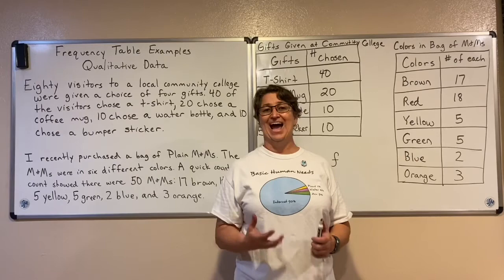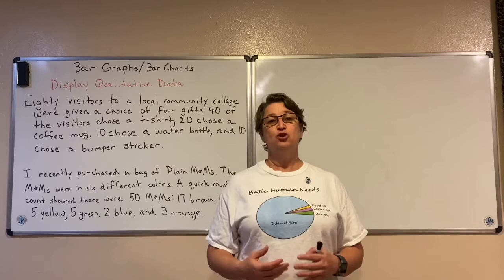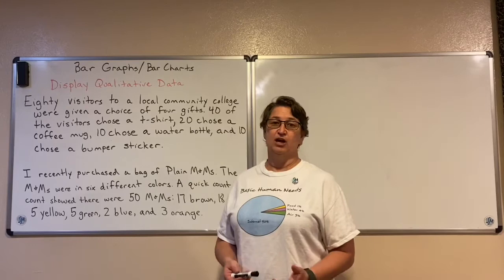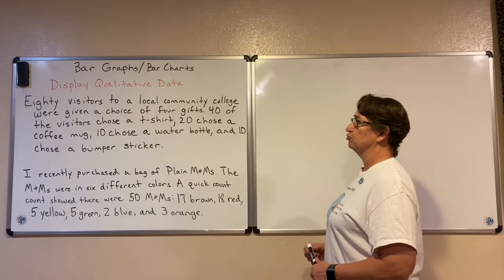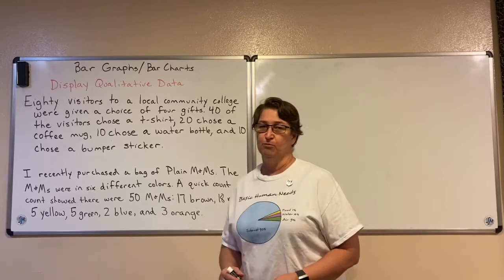Let's look at bar charts or bar graphs. Bar charts show qualitative data and display the frequency in each category — another type of frequency display. Let's make a couple of bar charts using the same examples. Eighty visitors to a community college were given a choice of four gifts: 40 chose a t-shirt, 20 chose a coffee mug, 10 chose a water bottle, and 10 chose a bumper sticker.